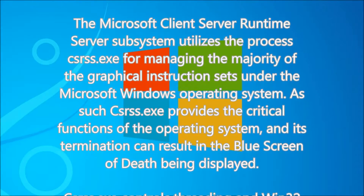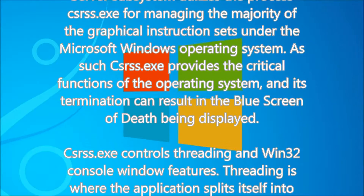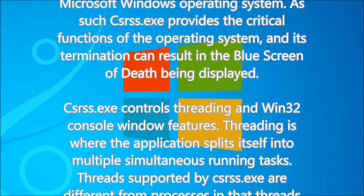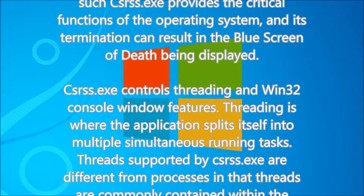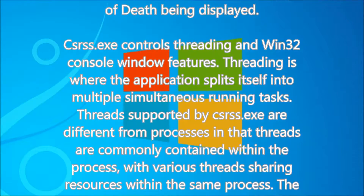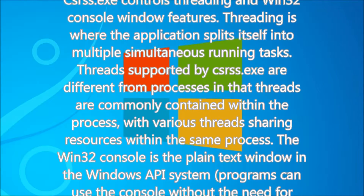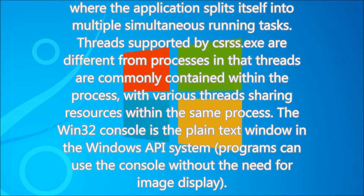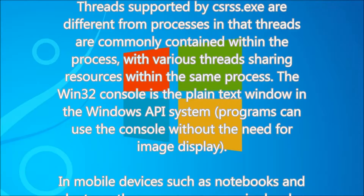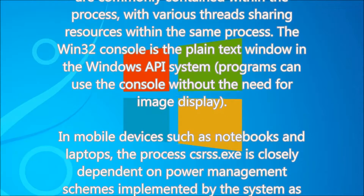csrss.exe controls threading and Win32 console window features. Threading is where the application splits itself into multiple simultaneous running tasks. Threads supported by csrss.exe are different from processes in that threads are commonly contained within the process, with various threads sharing resources within the same process. The Win32 console is the plain text window in the Windows API; system programs can use the console without the need for image display.